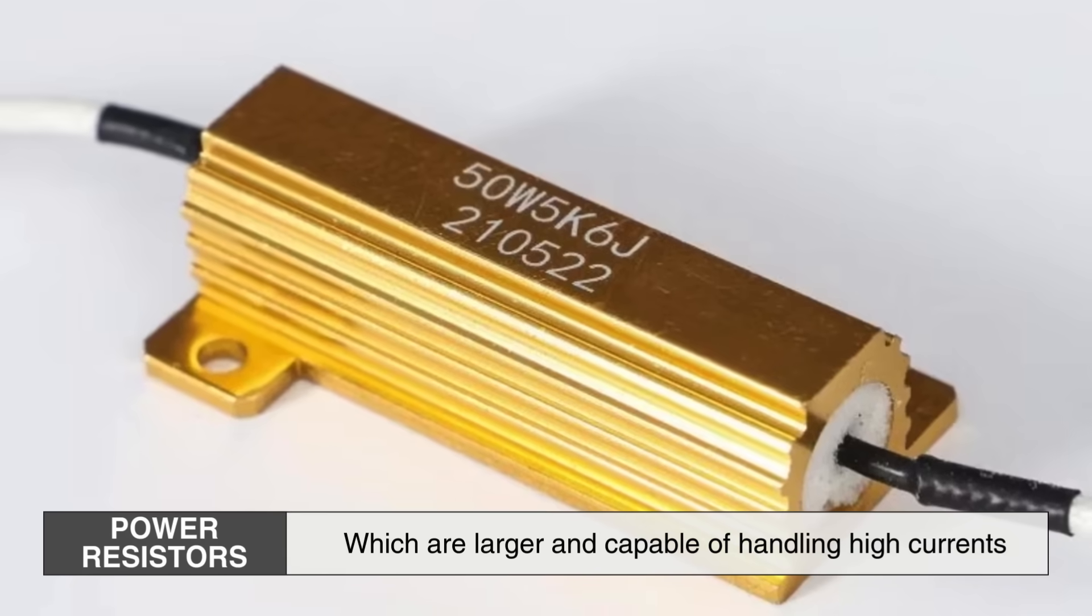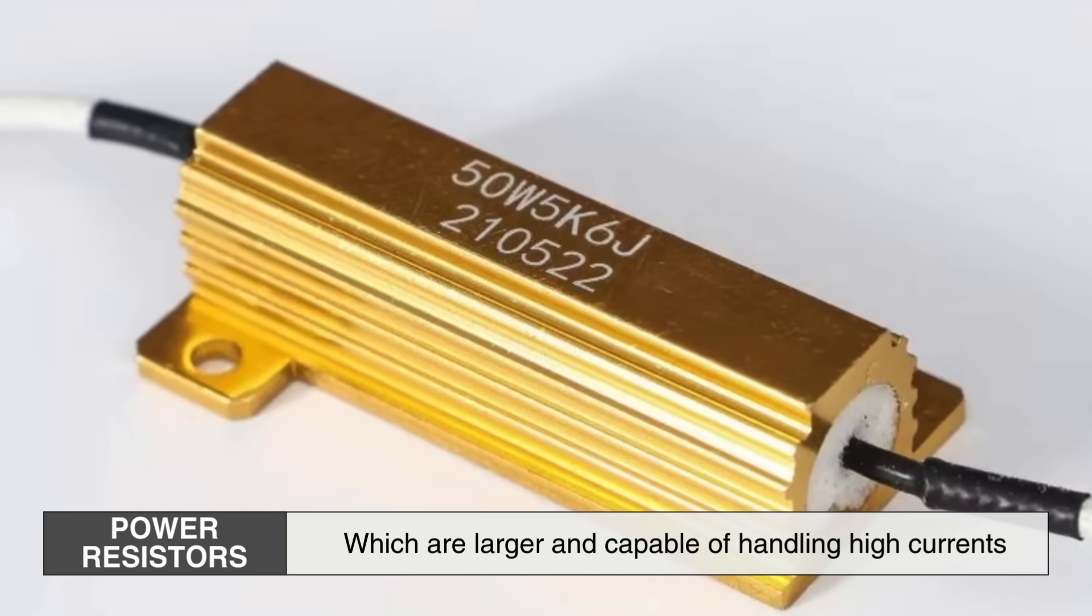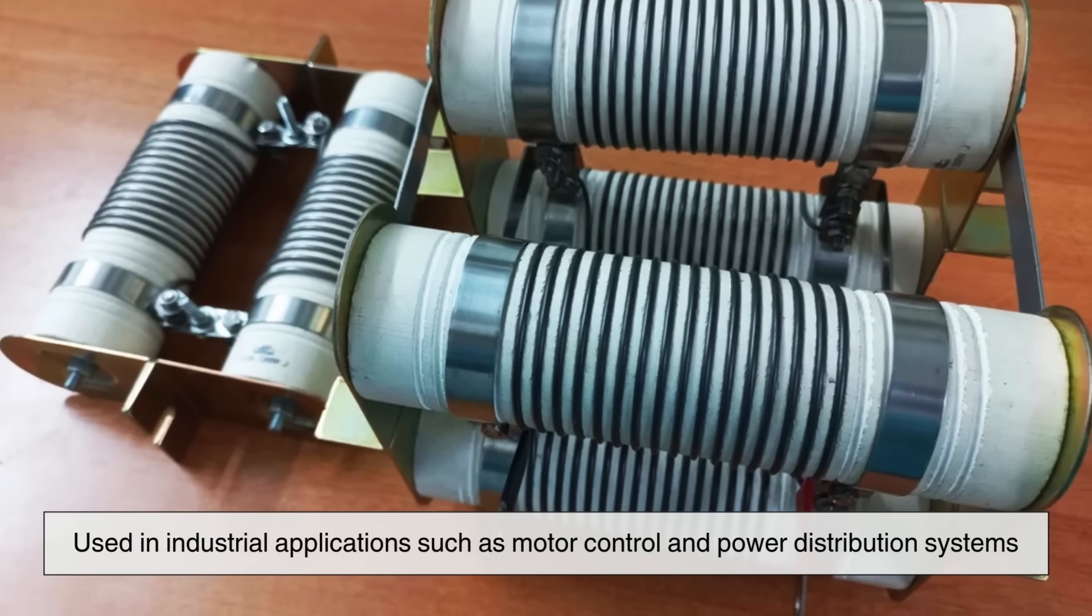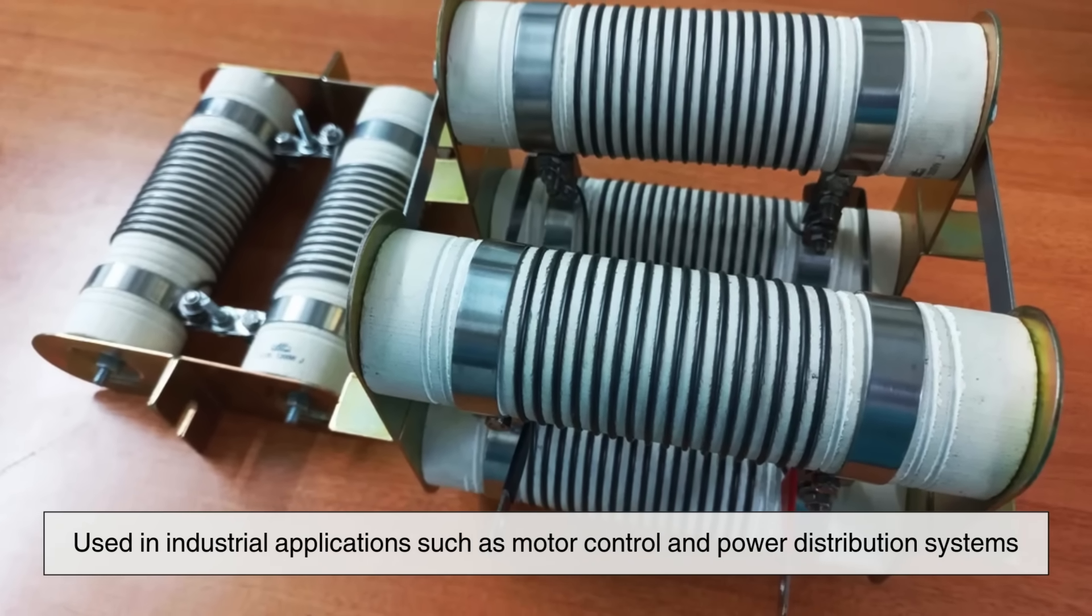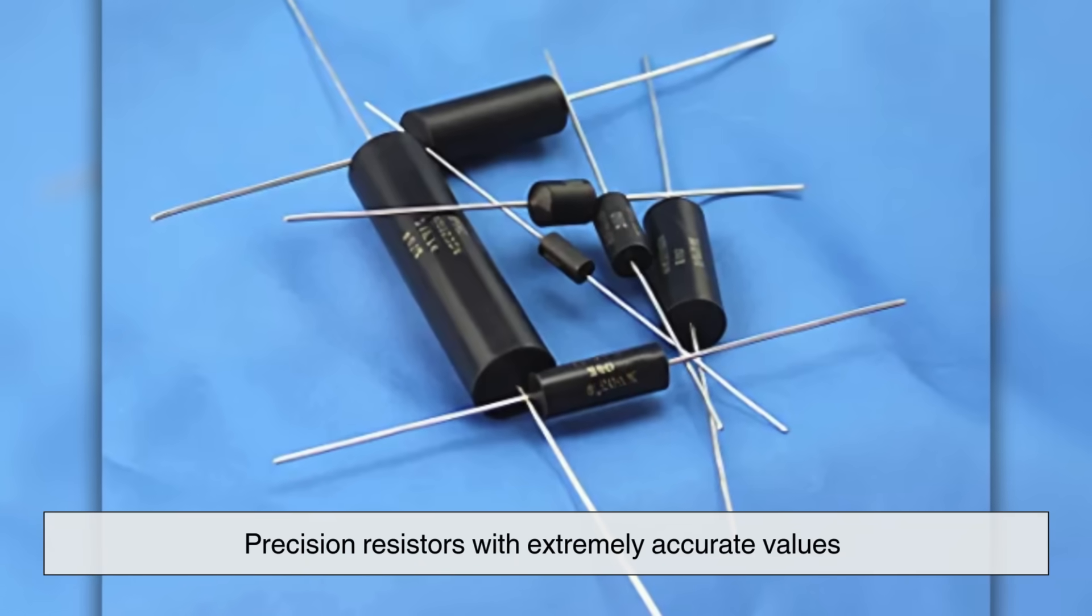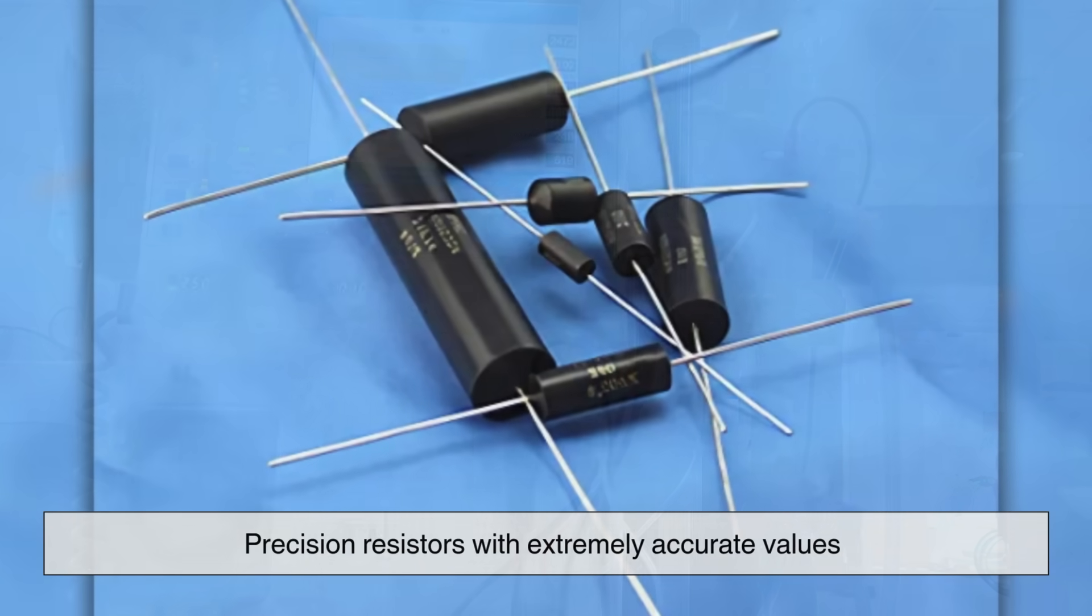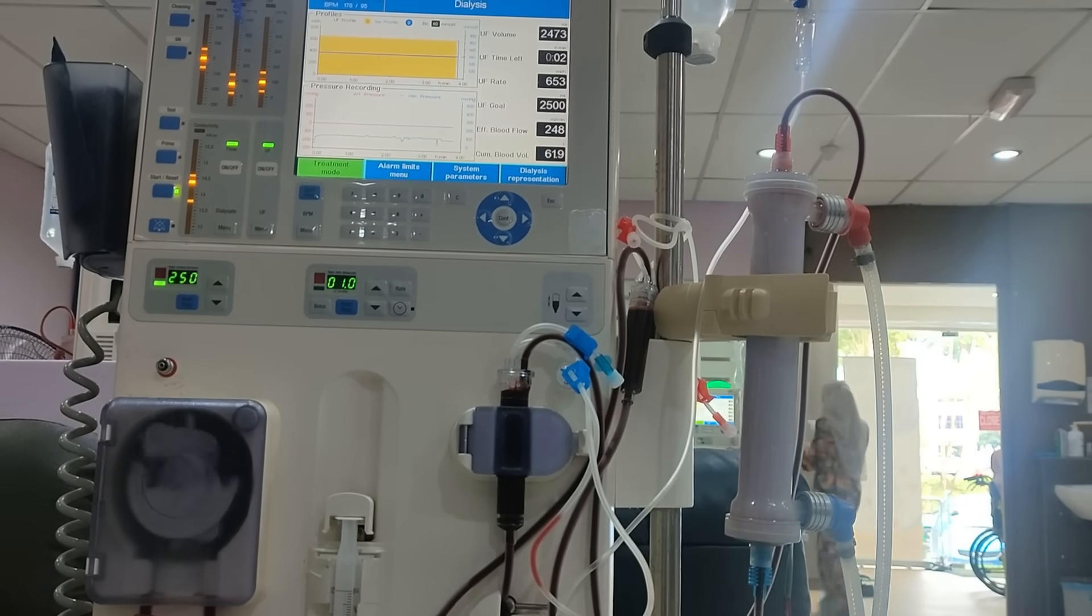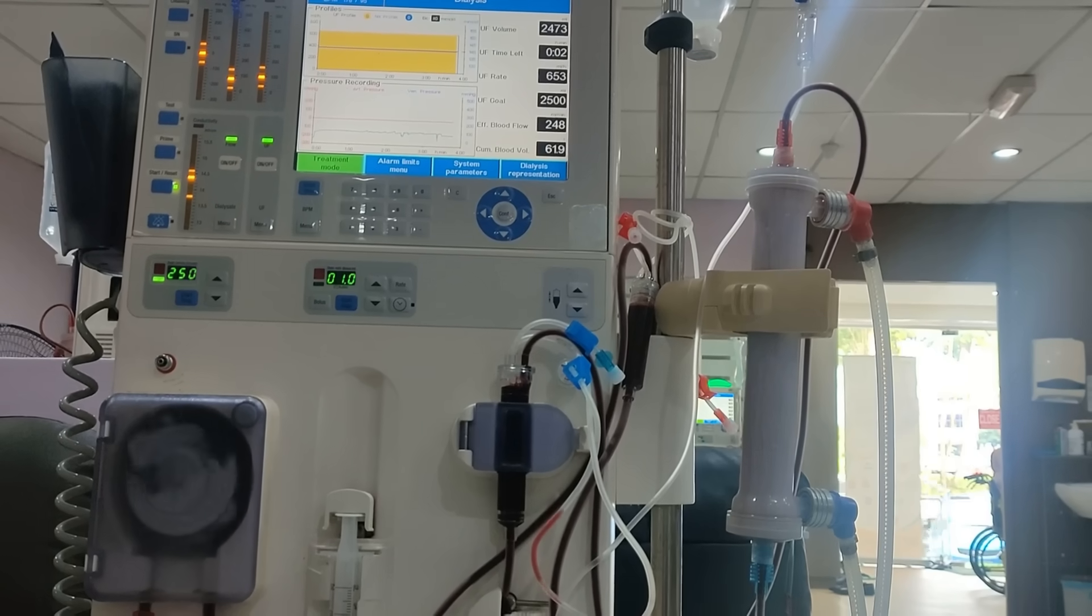Power resistors, which are larger and capable of handling high currents, are used in industrial applications such as motor control and power distribution systems. Precision resistors with extremely accurate values are critical in medical devices like ECG machines, ensuring reliable readings of vital signs.